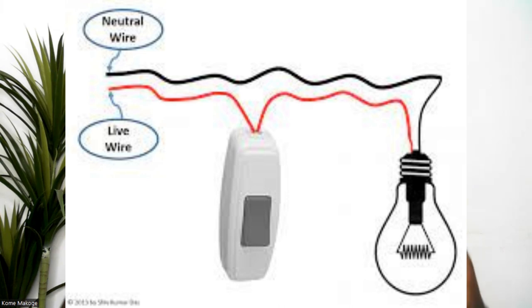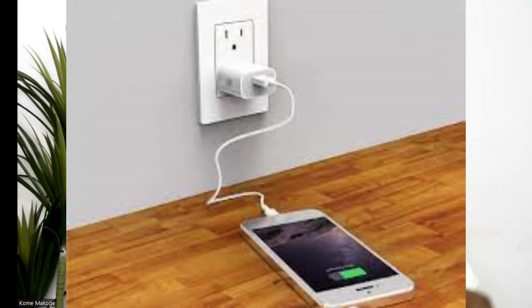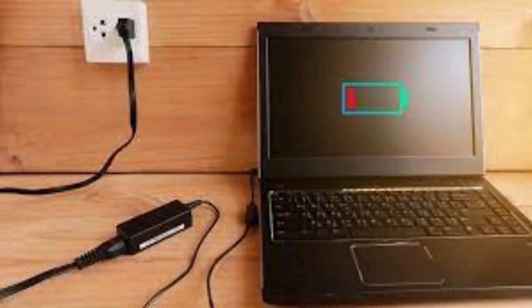A circuit is putting together different electrical or electronic components by the help of a cable or a wire, which interconnects all these different components together for a particular purpose. When we put all these different devices together, it could be because we want light in a particular area, or we need power to charge our phones or laptops.